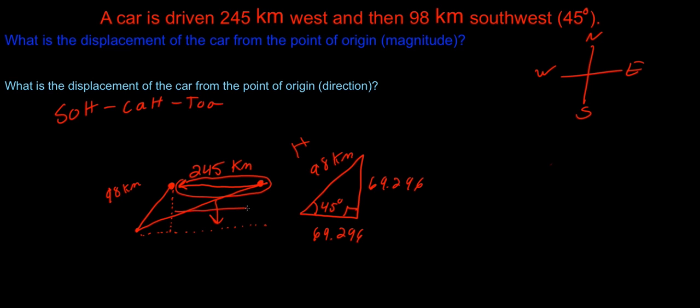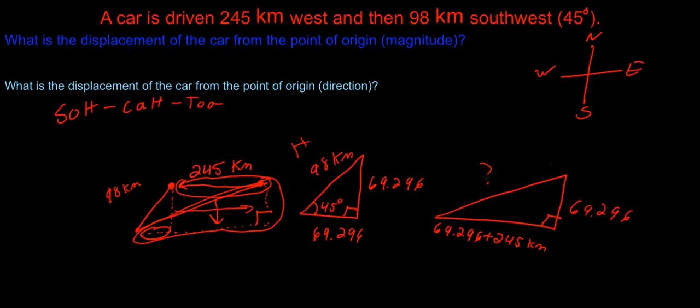If we draw our triangle differently where I bring this 245 kilometers down to here and we take this y component and bring it over here, we can see how this triangle makes a right angle. So our x component we found is 69.296 - we'll have to add 245 kilometers to it because that's this component right here.